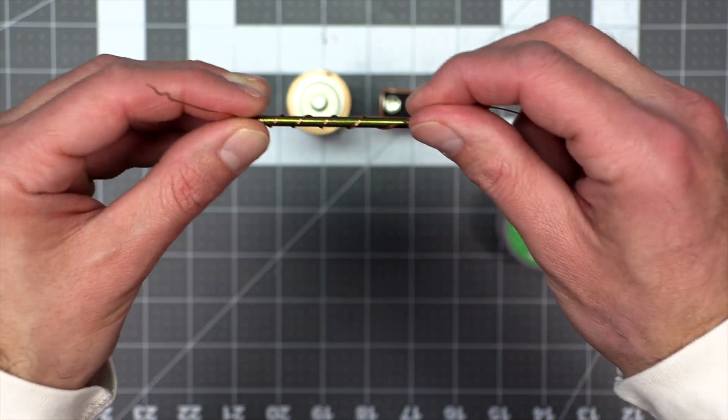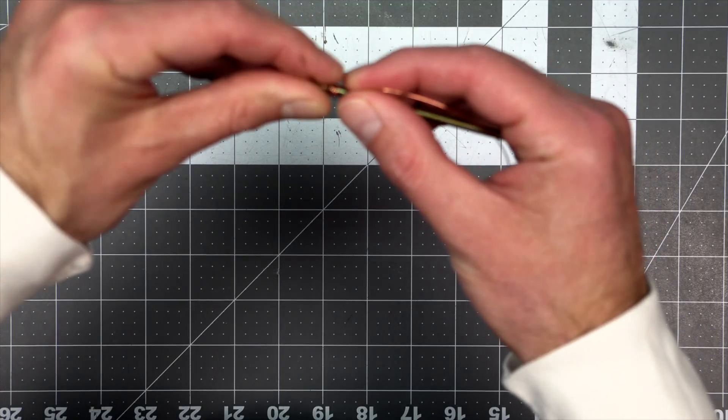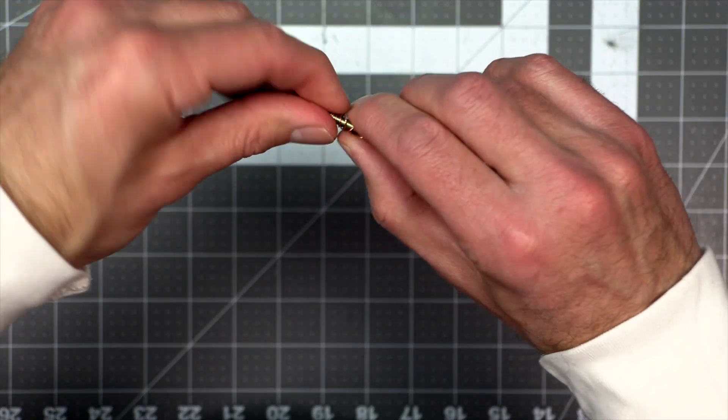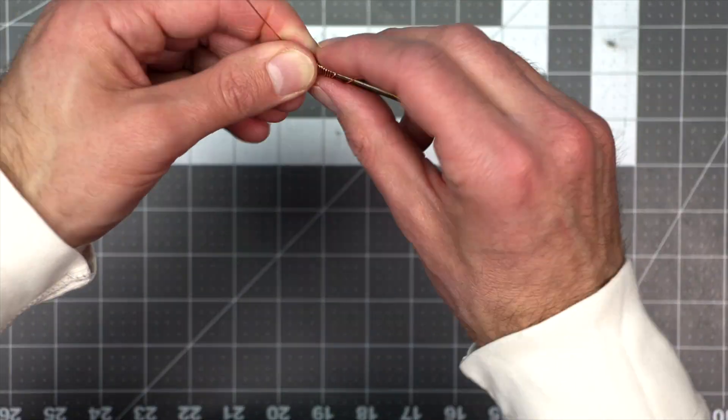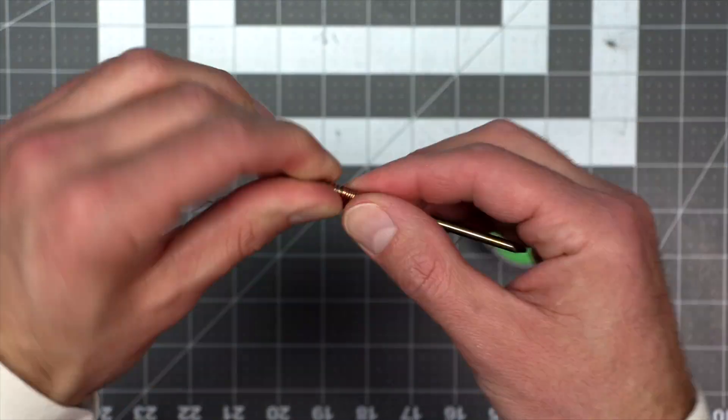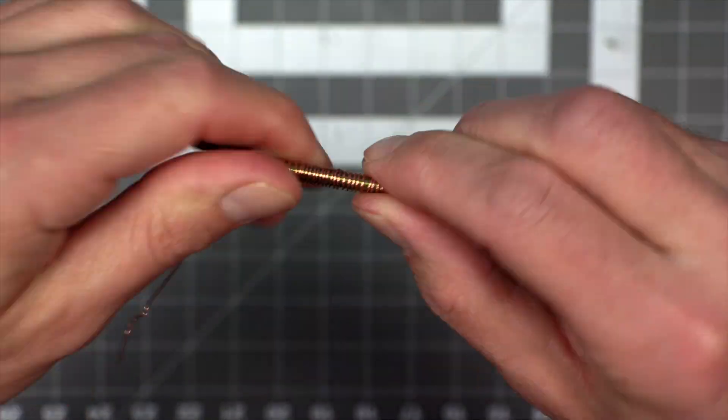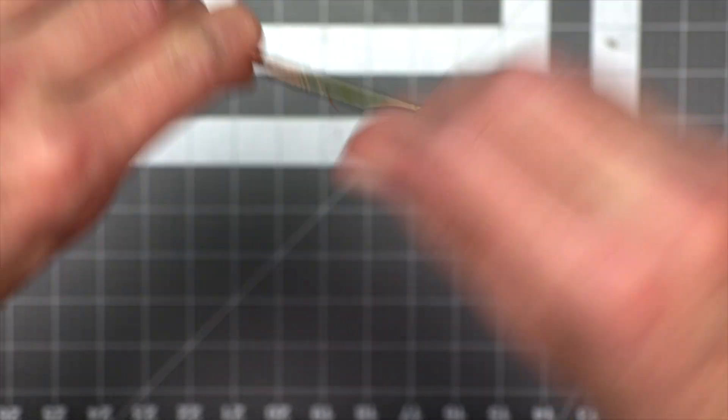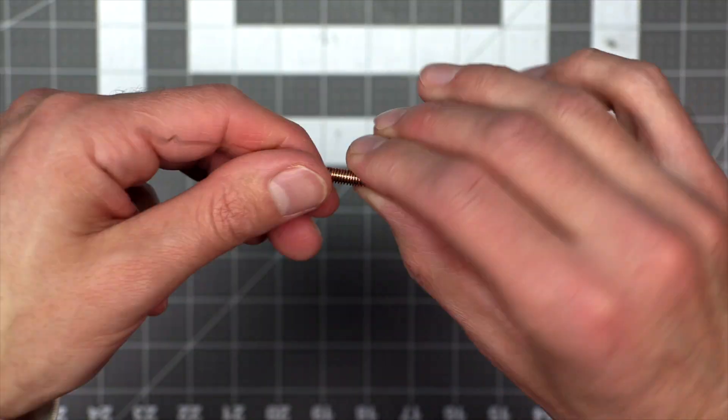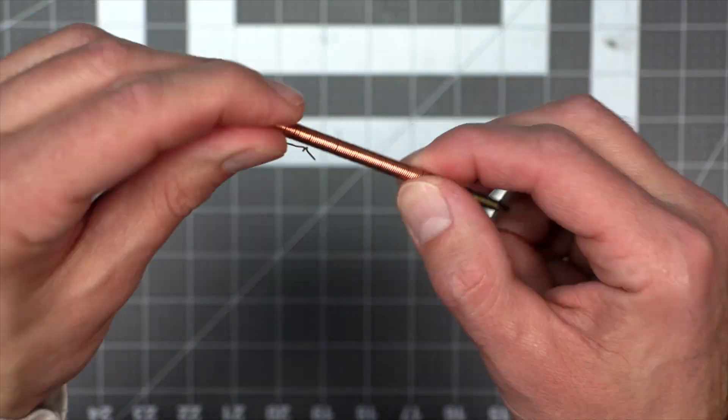Now, every time you pass electricity through a conductor like wire, it creates a small magnetic field. And when you wind it up multiple times, like I'm doing here, you're multiplying the magnetic field, making it stronger. You can experiment with how many times you wind your wire around the nail or screw and see if it affects the strength of the magnet.